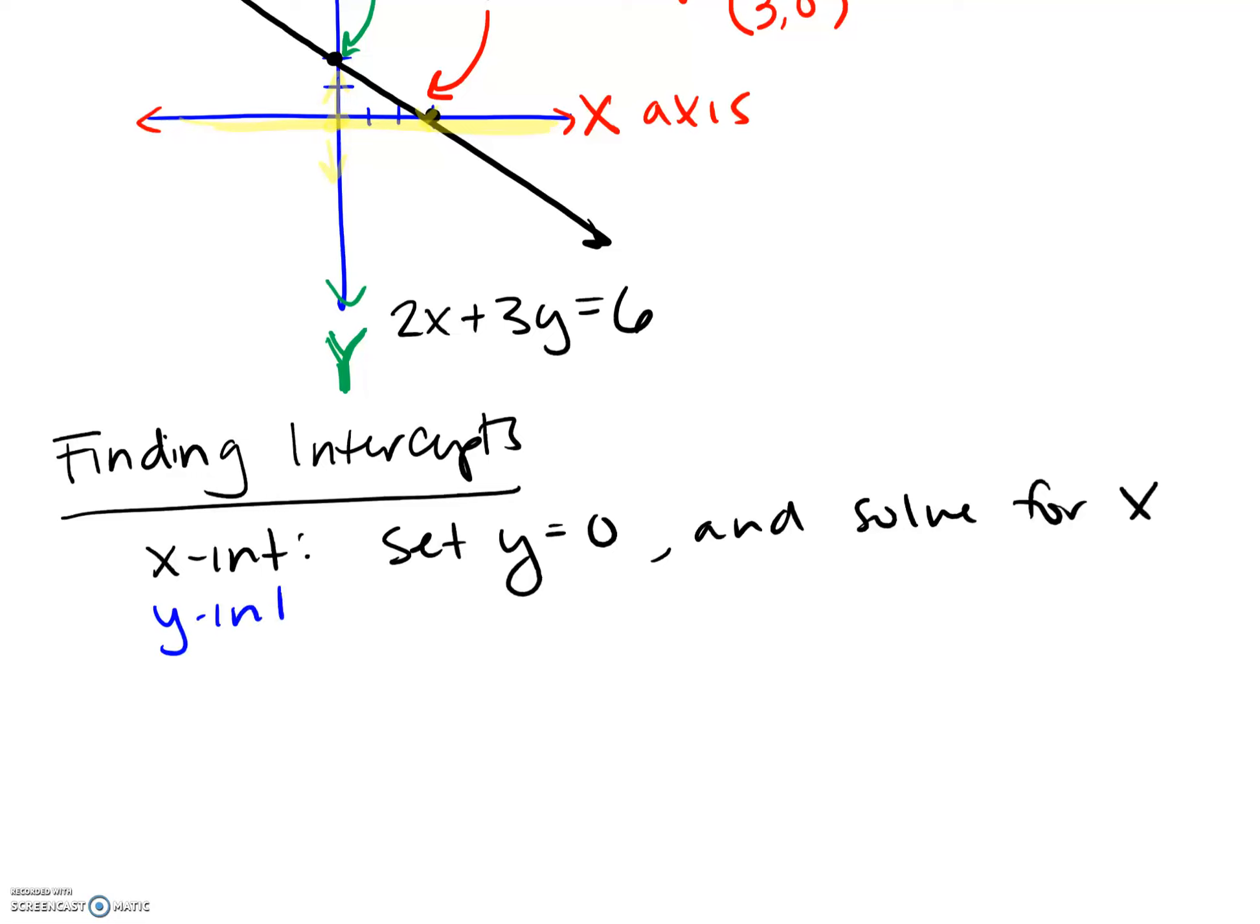And then to find your y-intercept, you do the exact same thing. So you're setting x equal to zero because you're saying don't move right or left, just tell me how far up or down I need to go. And you're going to be solving for your y. So that's how you find intercepts.